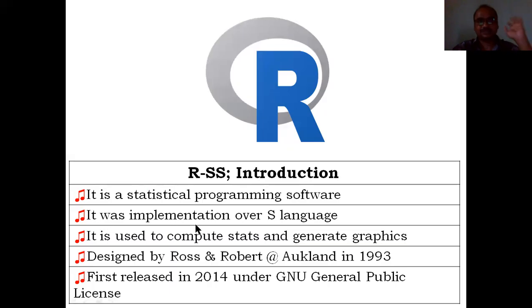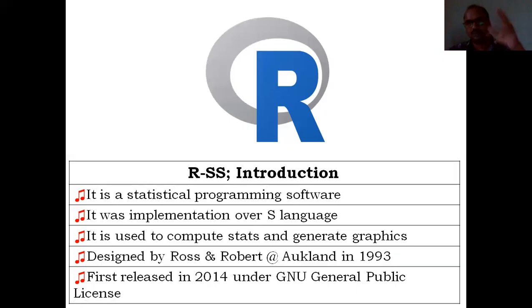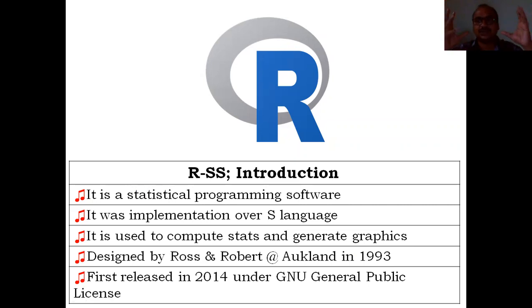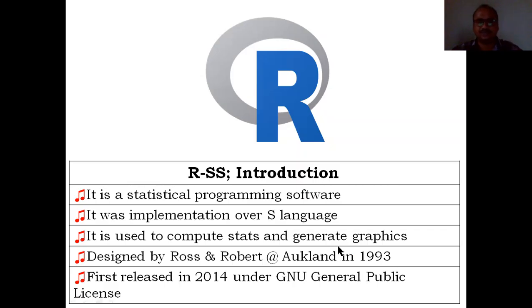R was an implementation over the S language; before R, the S language was also there, and both are competitive with each other, coming at almost the same era. R is used to compute statistics — that point you have to keep in mind. It also generates graphics: bar graphs, pie charts, line graphs — different types of charts can be generated with the help of R.